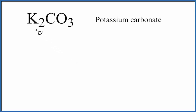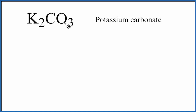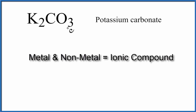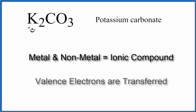To draw the Lewis structure for K2CO3 potassium carbonate, first we need to recognize that potassium is a metal, and CO3 is a group of nonmetals — that's the carbonate polyatomic ion. So we have a metal bonded to nonmetals. That's an ionic compound, and the metal will transfer valence electrons to the nonmetal.